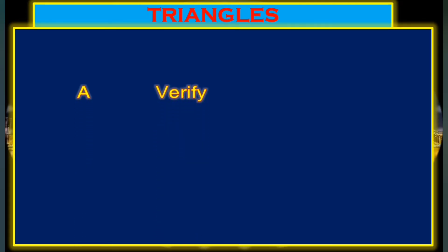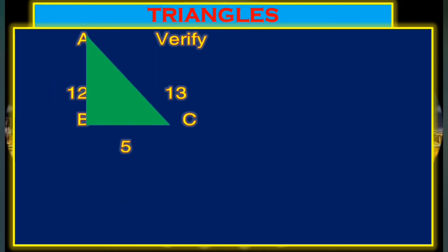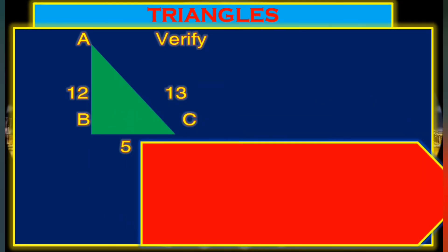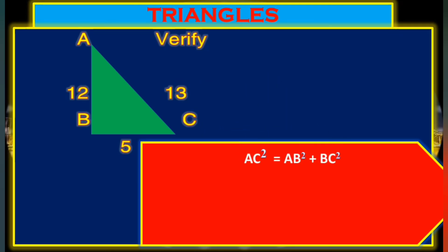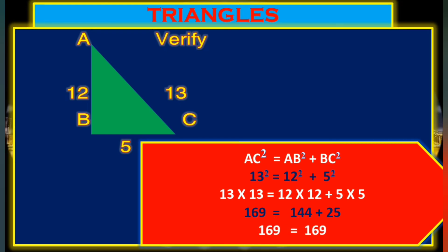Look at this example: in triangle ABC, AB is 13, BC is 12, and AC is 5. We verify: 13 squared equals 12 squared plus 5 squared. So 169 equals 144 plus 25, which is 169. The left side square value equals the right side square value — verified.